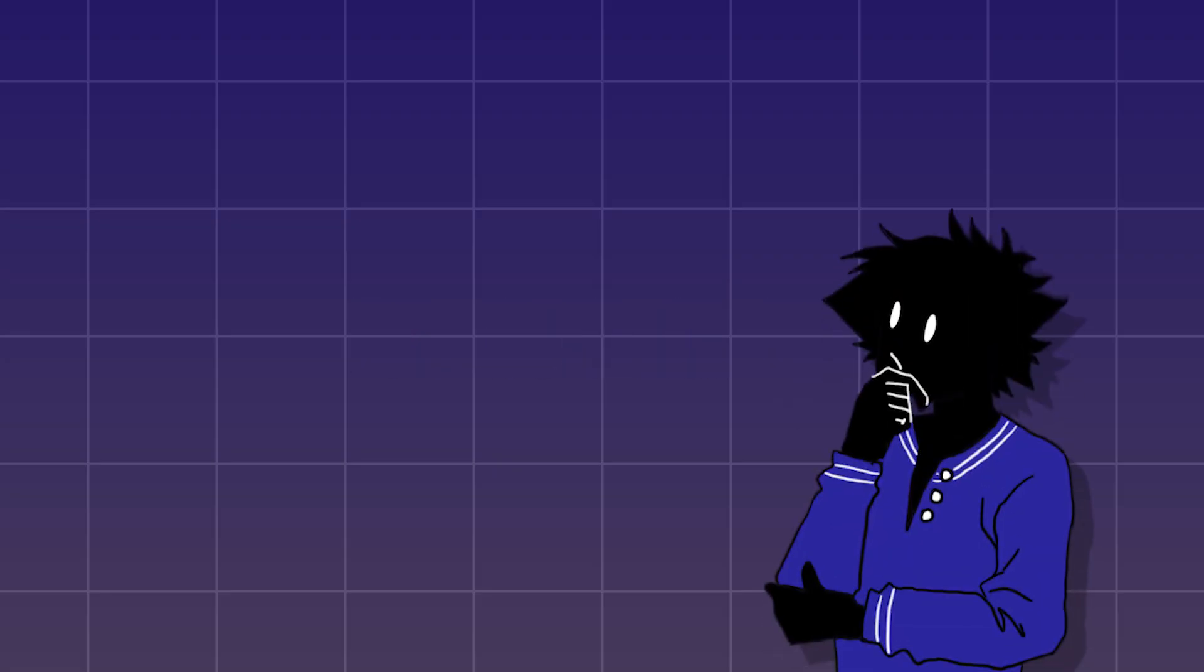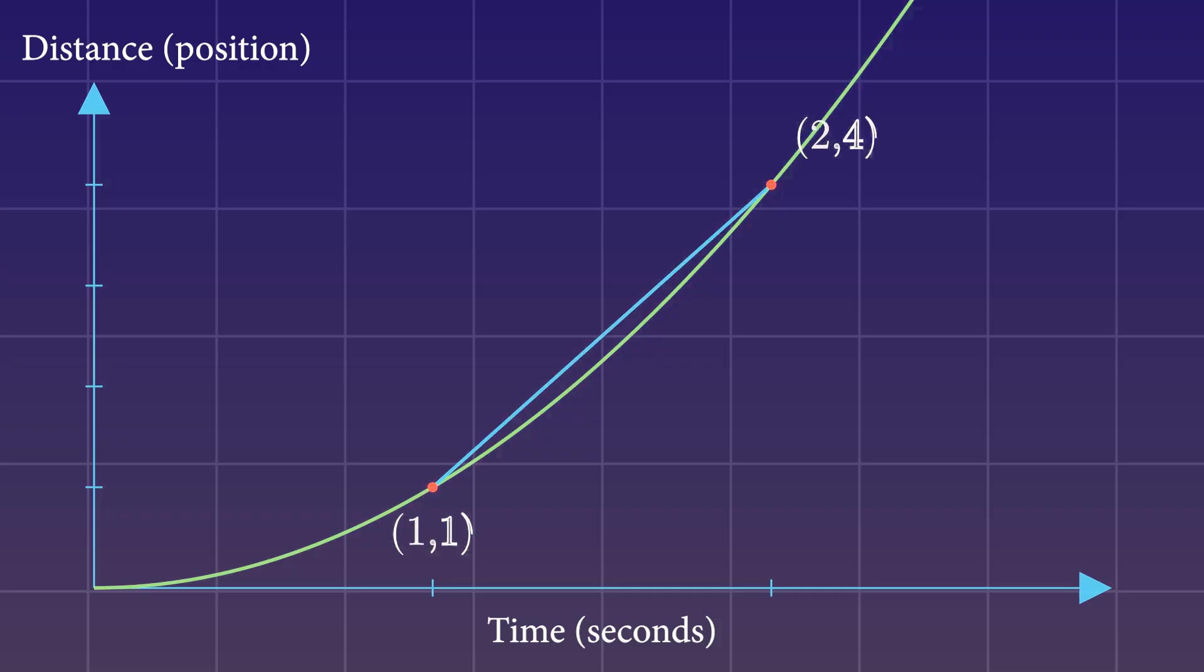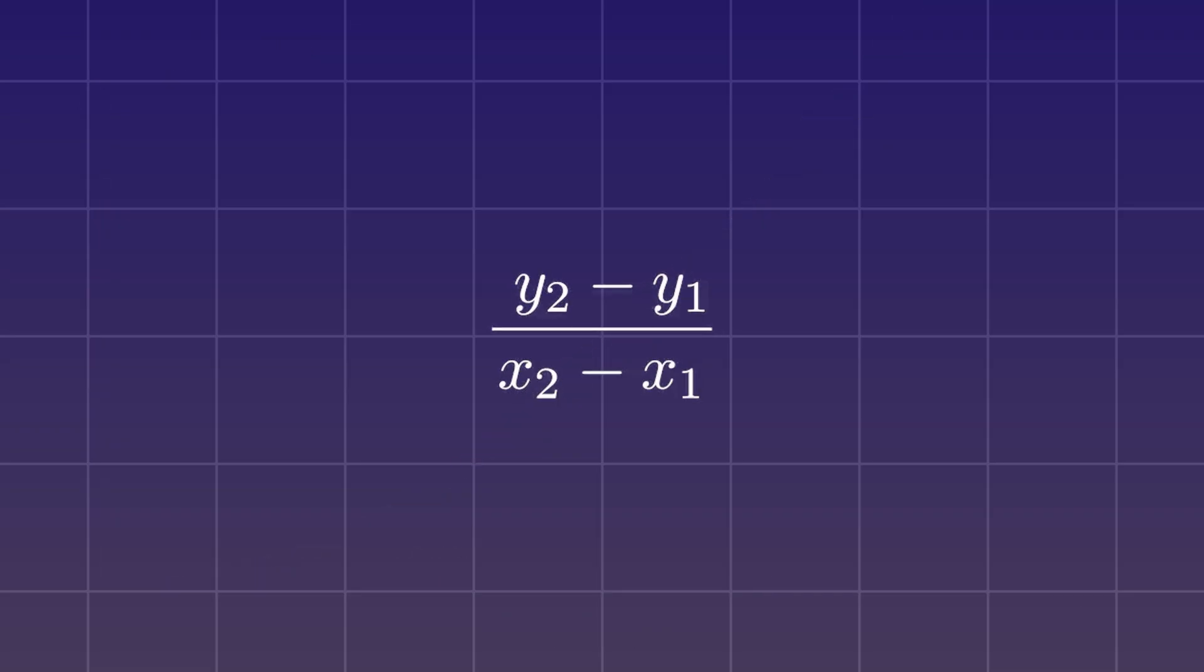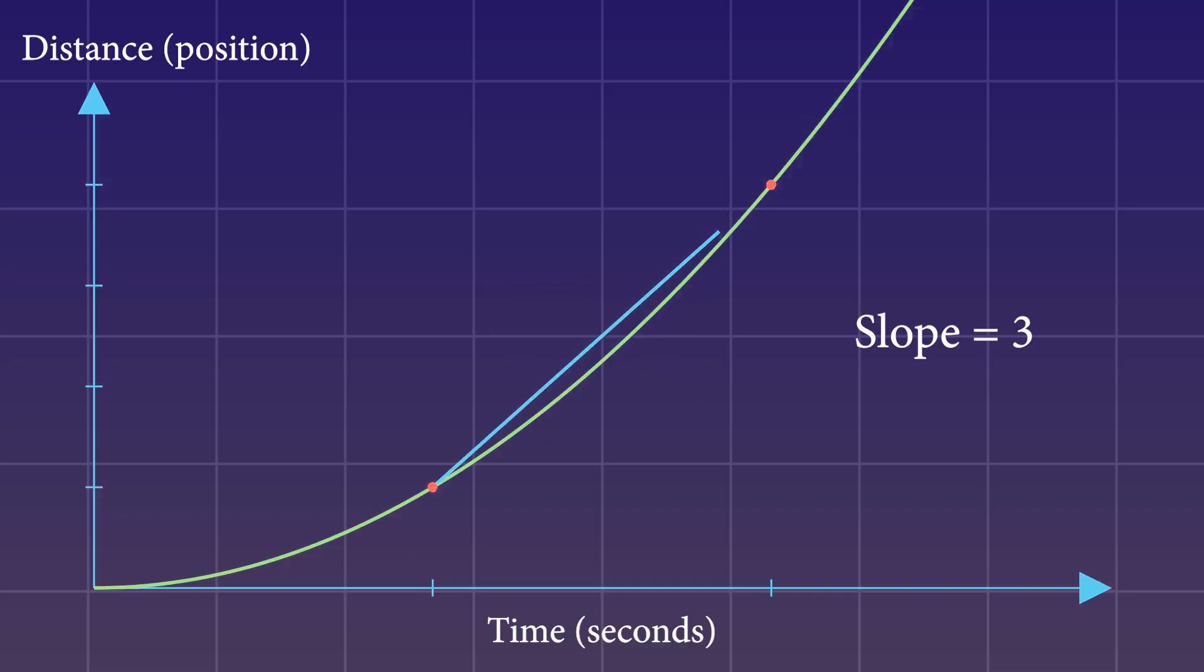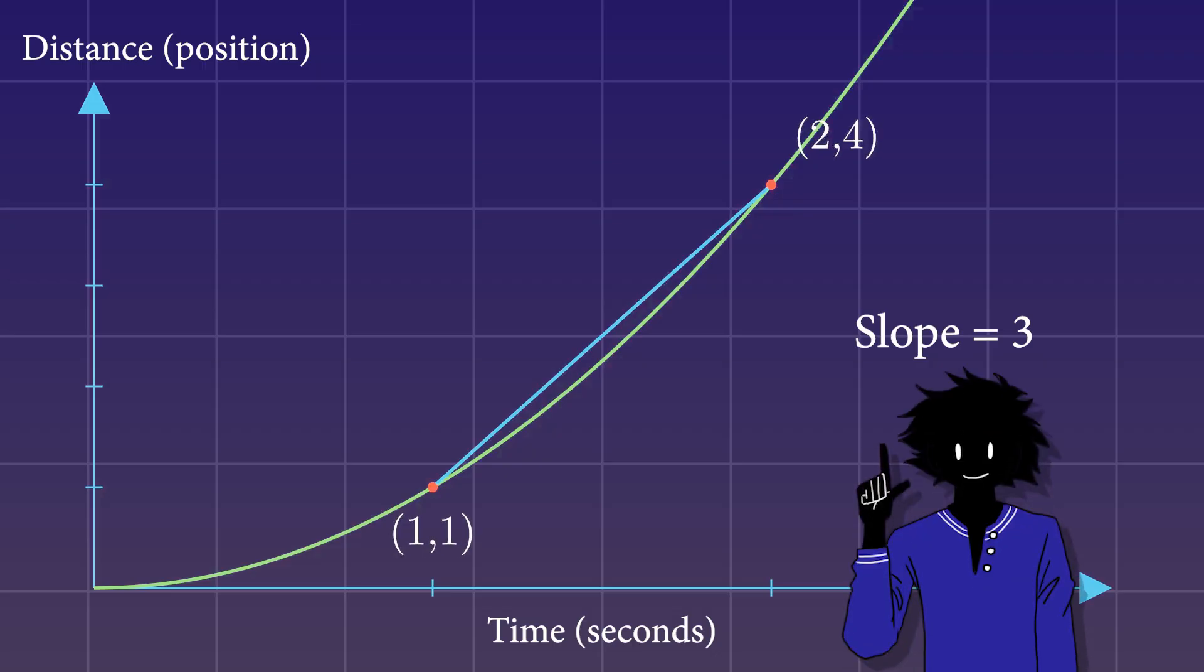So, how would you find the rate of change from 1 second to 2 seconds? Just like we did before, we find the rise over run and calculate using the formula. Although this graph is curved, so let's draw a line through these two points. This line is called the secant line. Anyway, when we calculate using the formula, we get 3. 3 is the average rate of change between 1 second and 2 seconds. And again, this is also the slope of the line.